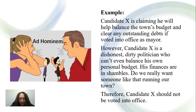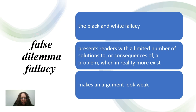Let's talk about this example. Candidate X is a candidate for a political office position. Therefore, it has nothing to do with the candidate's personal life. And because of that, it is considered a logical fallacy, because instead of focusing on the person's performance, the arguer is directing the attention of the audience towards personal issues. So it's an attack on the person.